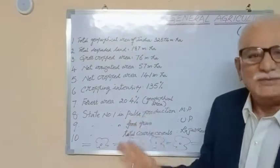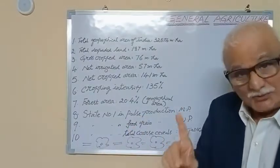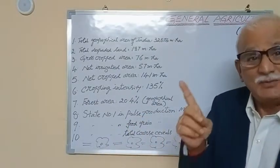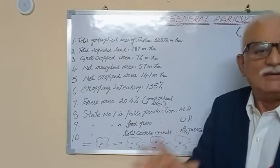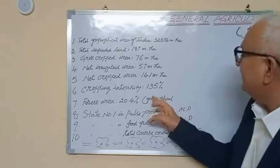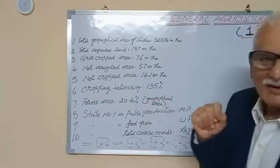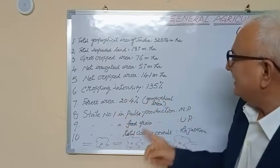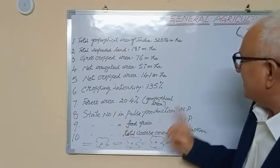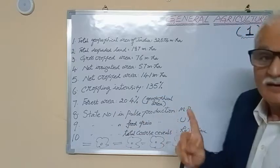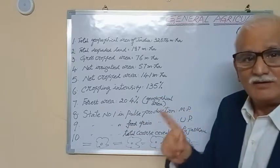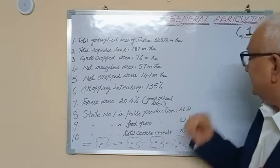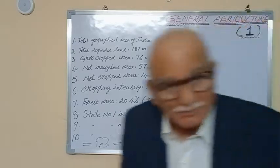Usually forest area should be 33%, but in India it is 20.4% — this question may also come. The state number 1 in pulse production in India is Madhya Pradesh.